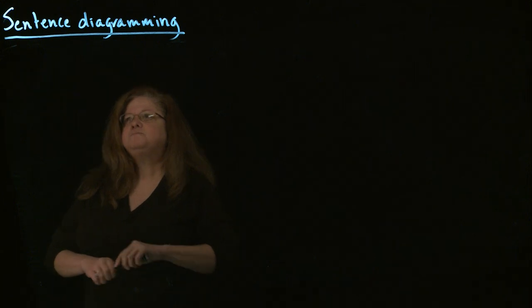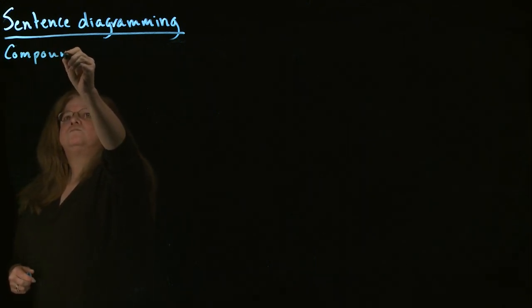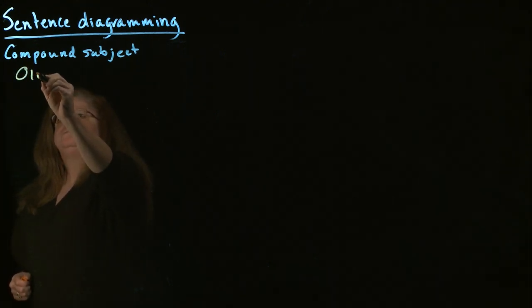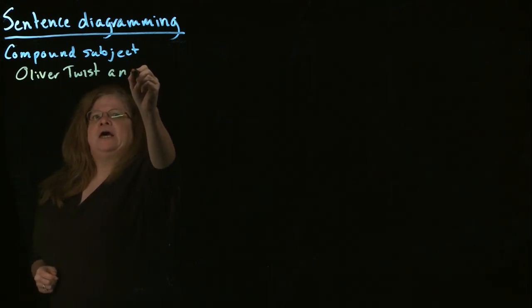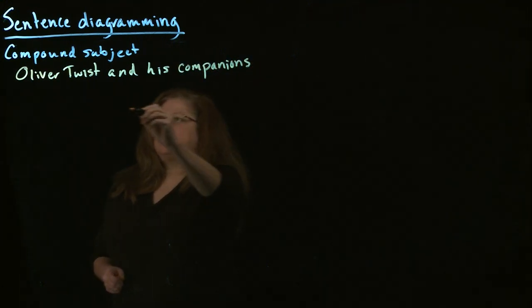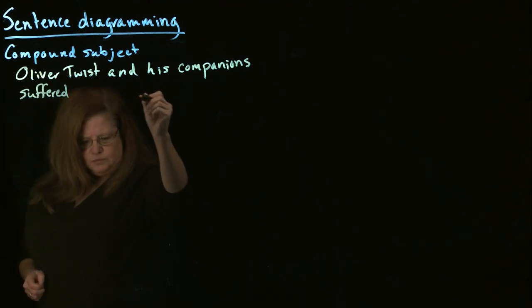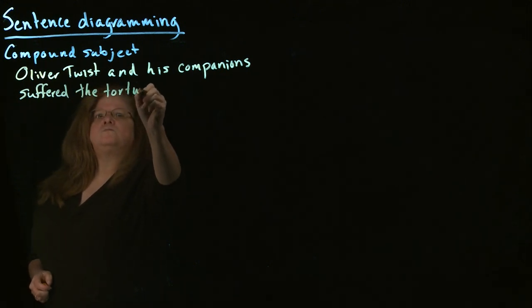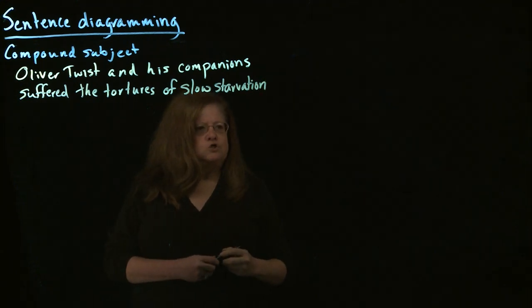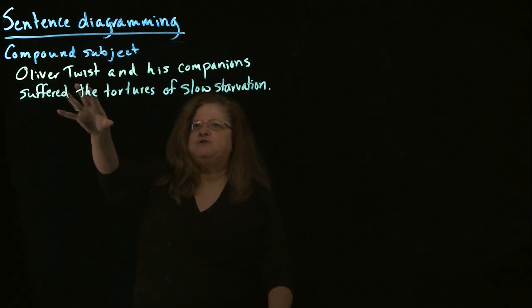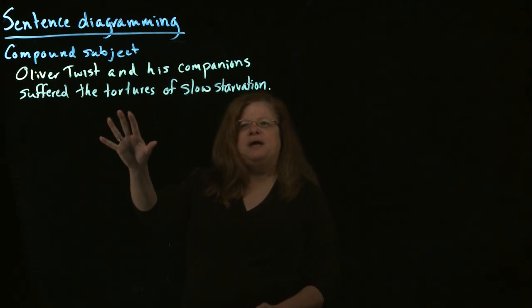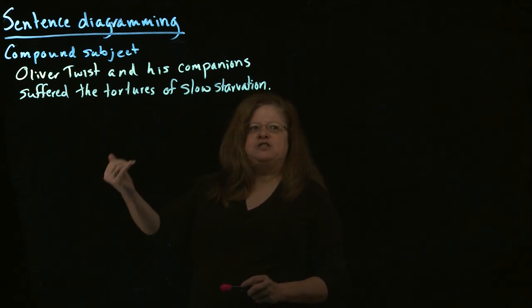We may have a compound subject. So we may have a sentence something like Oliver Twist and his companions suffered the tortures of slow starvation. So what we have to do with this particular sentence is we have two subjects. We have the one subject, Oliver Twist. We have the other subject, his companions. And so what we have to do is make a branching structure in our basic sentence framework.